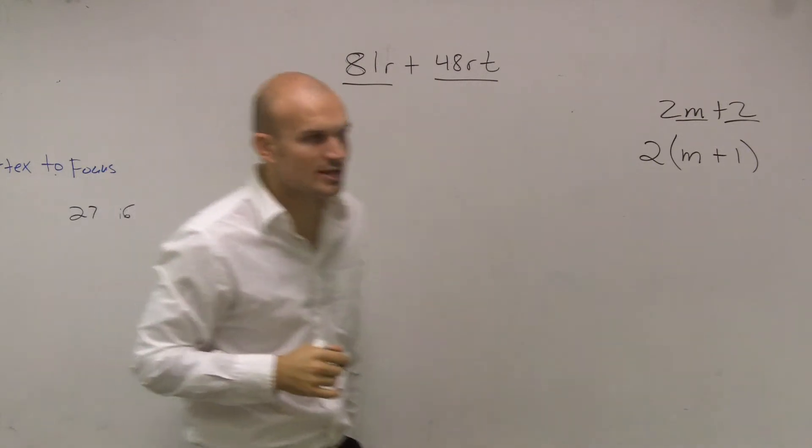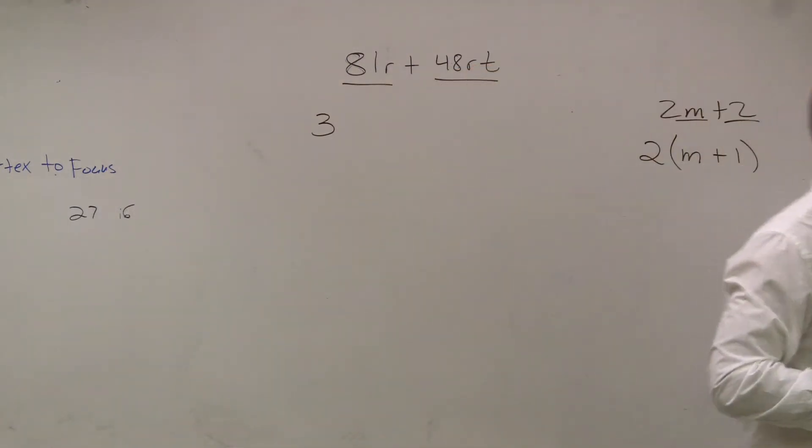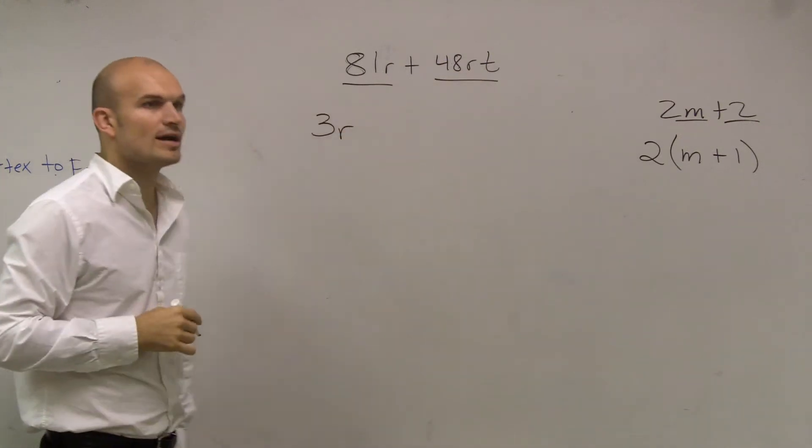Now, what else do they share that I can also divide it by? They also share one other variable. Variable, yes. R, right? They don't both share a t, so I can't factor out a t, but they both share an r. So I can factor out a 3r.